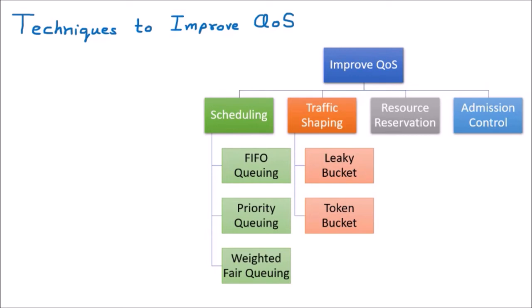Now we discuss techniques to improve quality of service. When sending data from source to destination through a medium, the flow of data decides QoS in terms of performance, reliability, bandwidth, delay, and jitter. There are four major areas for improving QoS: scheduling, traffic shaping, resource reservation, and admission control.